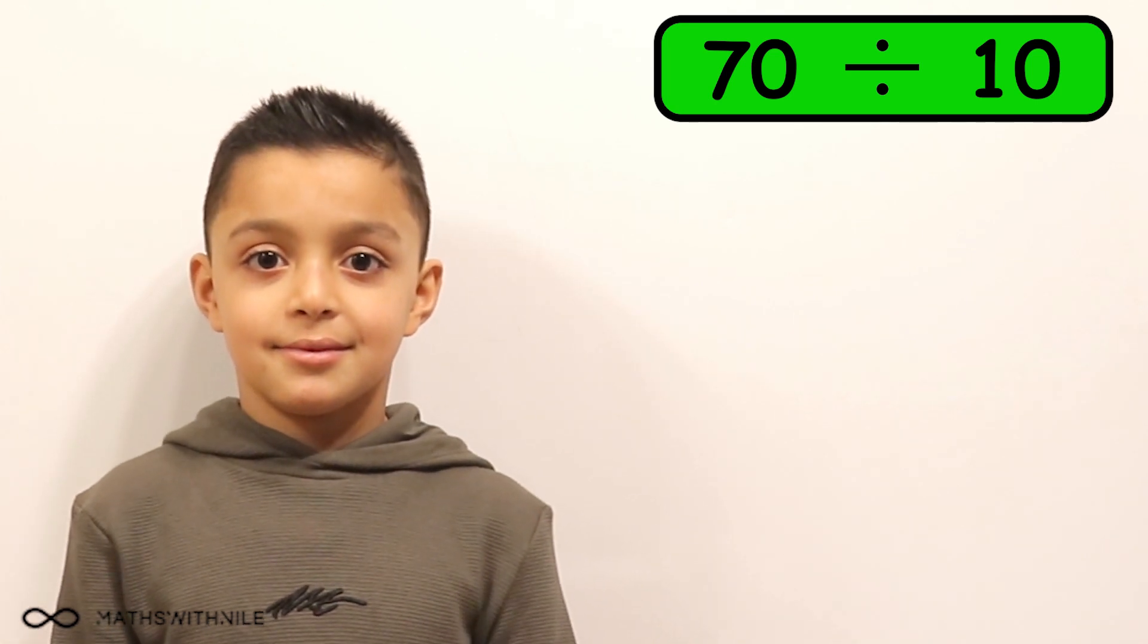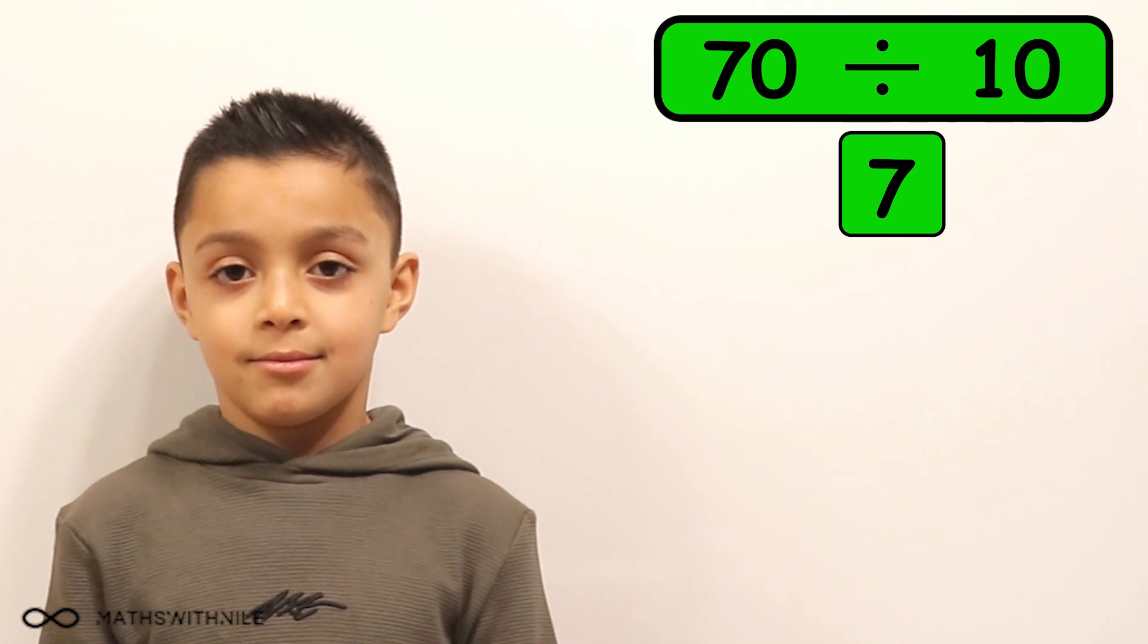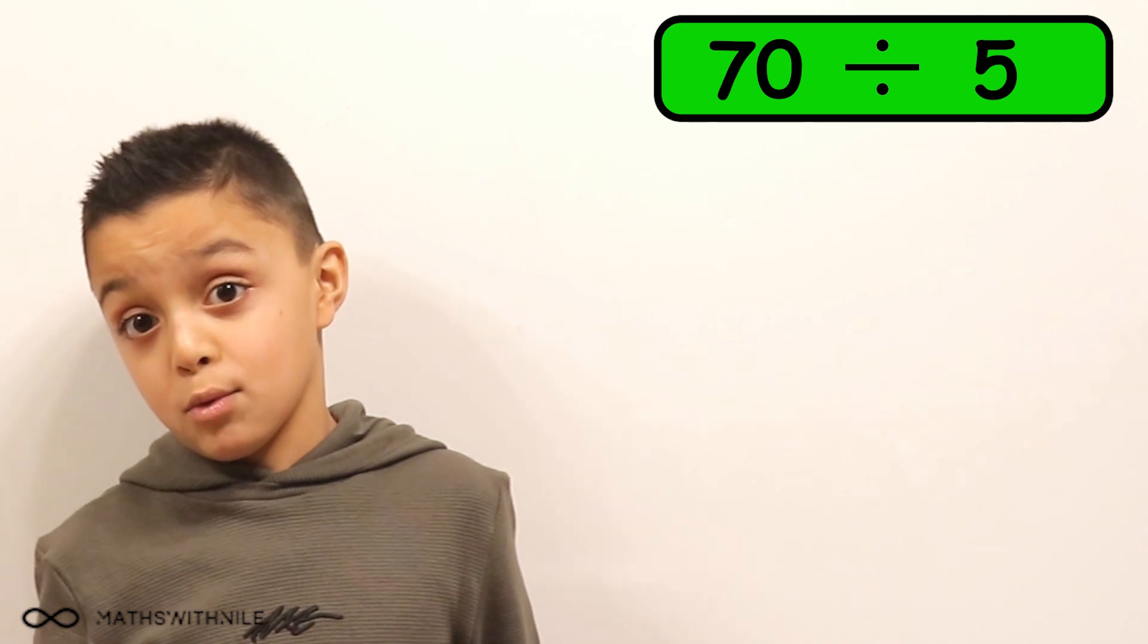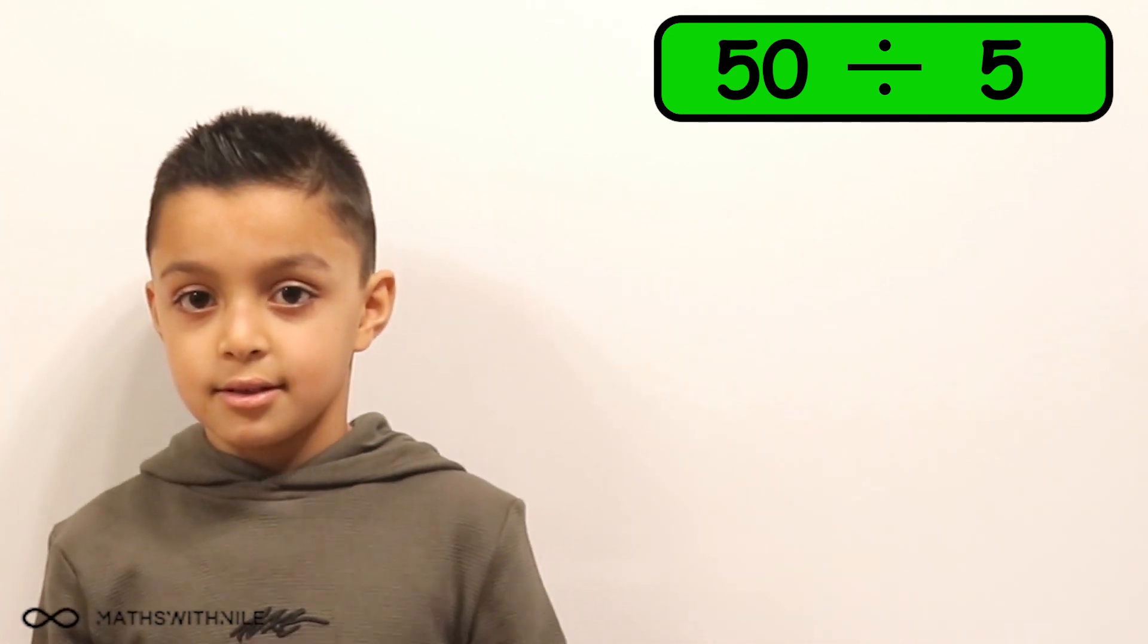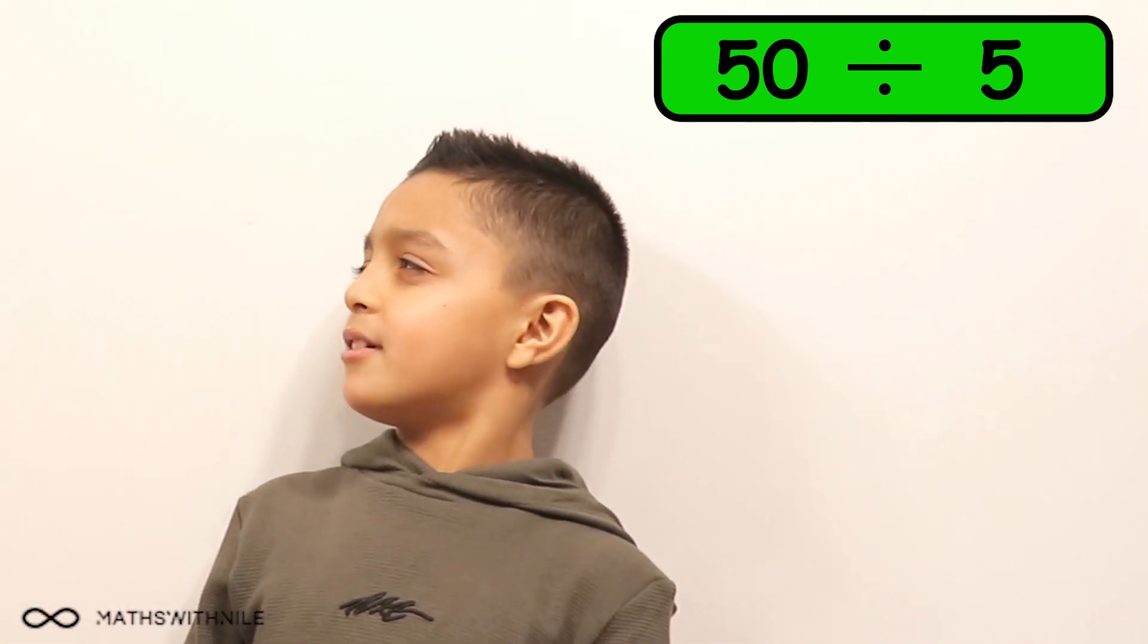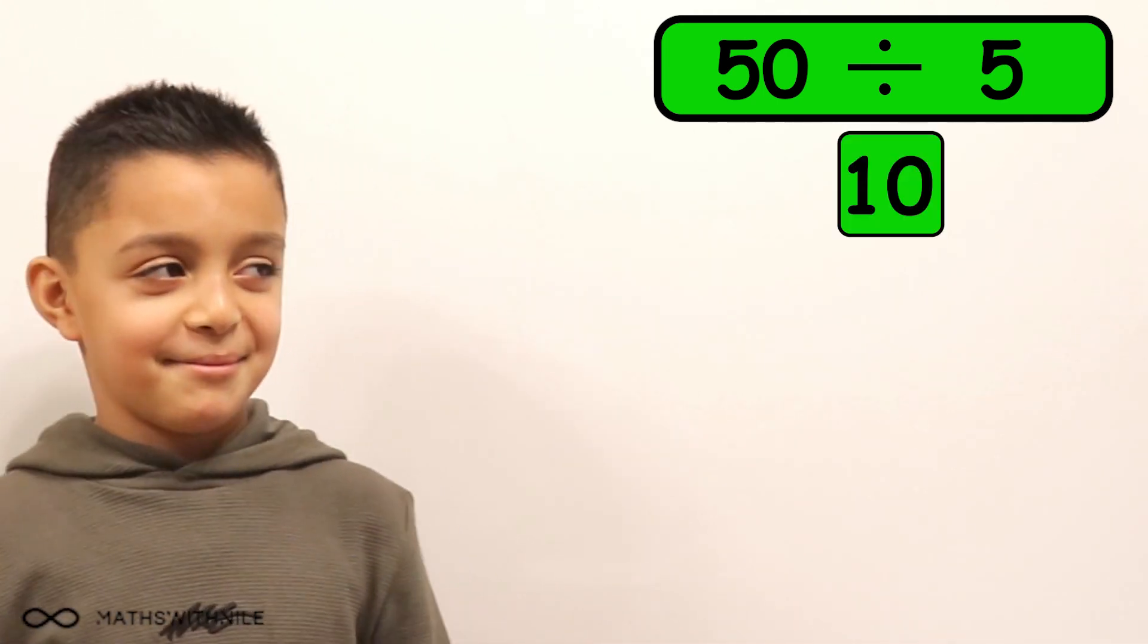Seventy divided by ten. Seventy divided by ten equals seven. Very good. What's seventy divided by five? Seventy divided by five equals fourteen. Very good, Niall. Okay. Fifty divided by five. Fifty divided by five equals a hundred. What? No, fifty. Fifty divided by five... How many fives in fifty? Oh, ten.